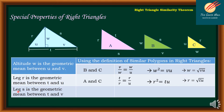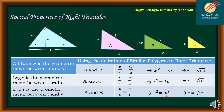Next, leg S is the geometric mean between T and B. Considering areas A and B, B over S equals S over T. Using cross-products, S squared equals BT. Solving for S, we get S is equal to the square root of BT.